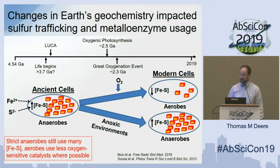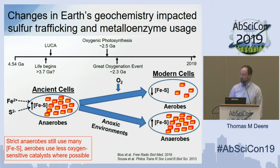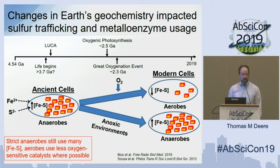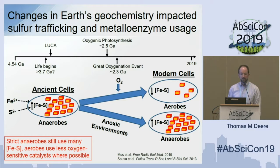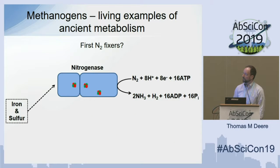Earth's geochemistry has shifted pretty radically over geologic time. Early on we think there were locally abundant sources of reduced iron and sulfide, and that ancient cells broadly made use of these, incorporating clusters into iron-sulfur proteins to carry out important reactions for life. With the rise of atmospheric oxygen these became much less attractive cofactors, so aerobes have minimized their use, but modern strict anaerobes like methanogens still make use of loads of iron-sulfur proteins.